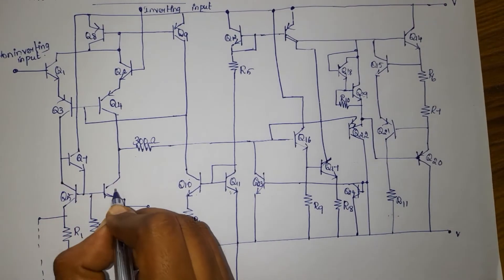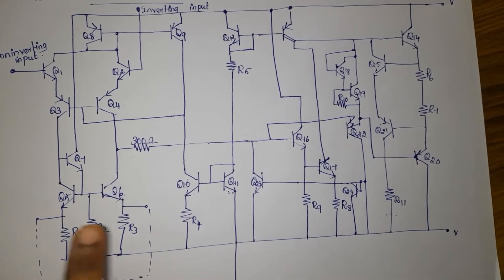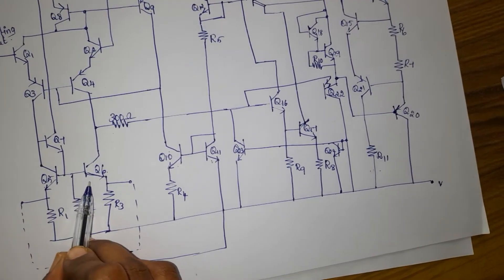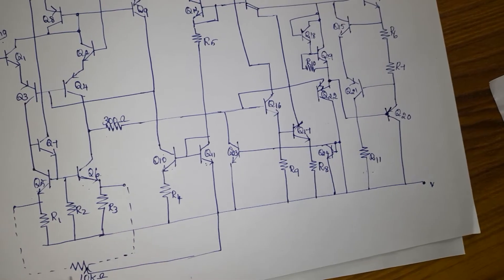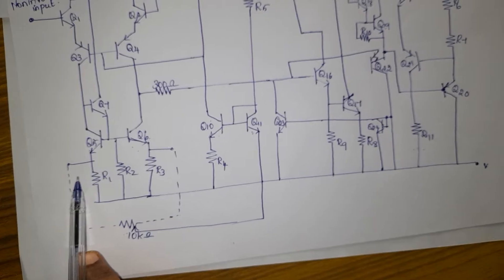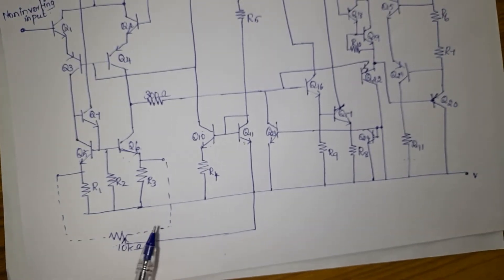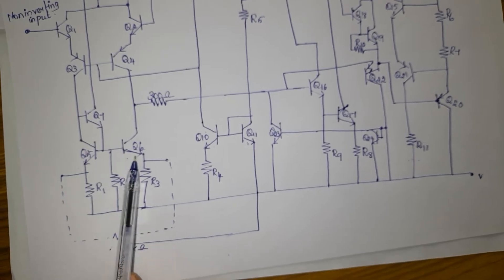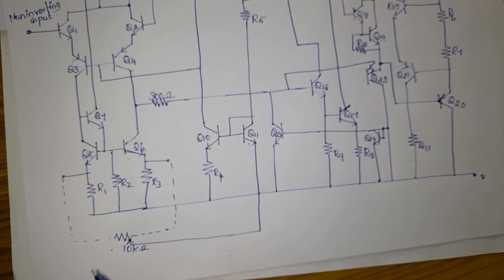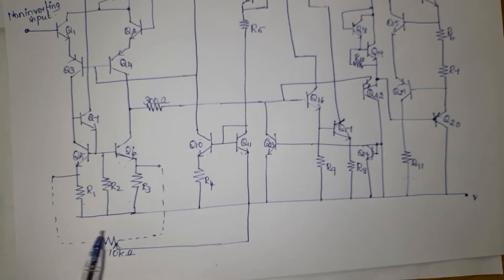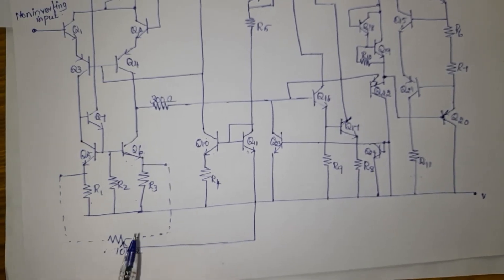Transistors Q5 and Q6, along with resistances R1, R2, and R3, form the controlled current source. A 10 kilohm potentiometer is connected between the offset null terminal and the negative supply via the wiper. This potentiometer is used to control the emitter currents of Q5 and Q6. This arrangement helps in minimizing offset voltage and current.